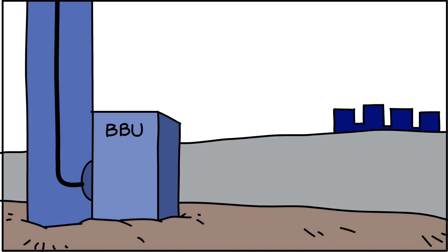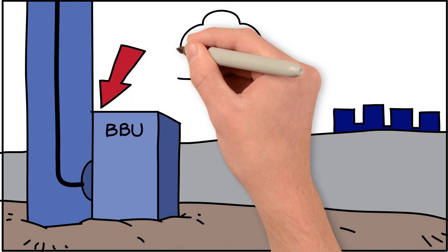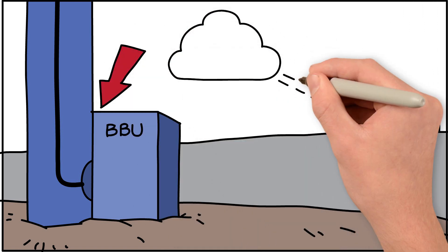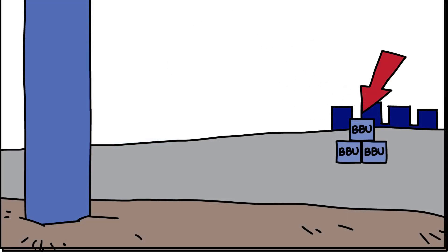In D-RAN, the BBUs are located at the bottom of each base station and act independently. However, in C-RAN, the BBUs are stored further away in a central location where they can work together. While this configuration seems like a simple idea, C-RAN alone can have a great impact in RAN efficiency.